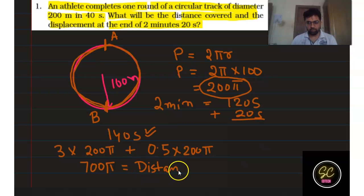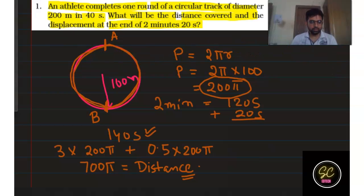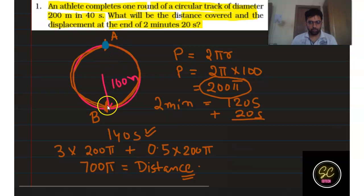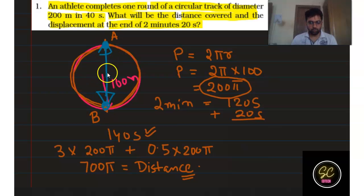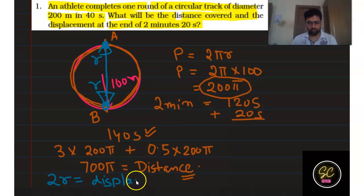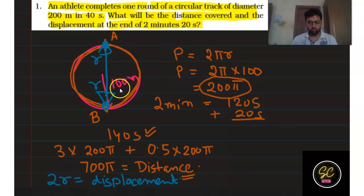Now for displacement. Looking at the diagram, after 3.5 rounds the athlete started here and finally reached the diametrically opposite point. From the diagram, this straight-line distance is equal to r plus r, so displacement equals 2 times the radius. Since the radius is 100 meters, the displacement is 200 meters.